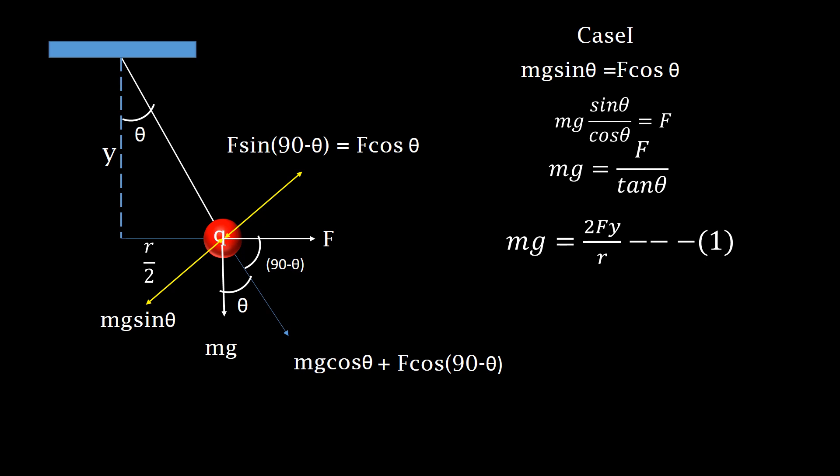Now we will go to case 2. In case 2, F will not be the same as the distance has changed. Therefore, we will replace F by F1. Y is now reduced to y by 2 and r is changed to x.